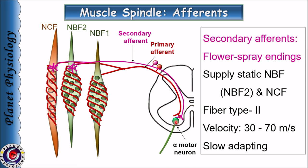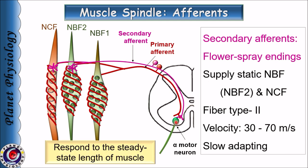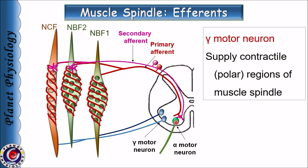Secondary afferents, or flower spray endings, are type 2 nerve fibers with a conduction velocity ranging between 30 to 70 meters per second. They innervate static nuclear bag fibers as well as nuclear chain fibers. Secondary endings are slow-adapting receptors, and these fibers along with annulospiral endings are responsible for the static response — they respond to steady state length of the muscle and hence maintain a particular position of the muscle for a given duration. These fibers mainly make polysynaptic connections with anterior horn cells in the spinal cord, but a few also synapse directly with motor neurons and contribute to the stretch reflex.